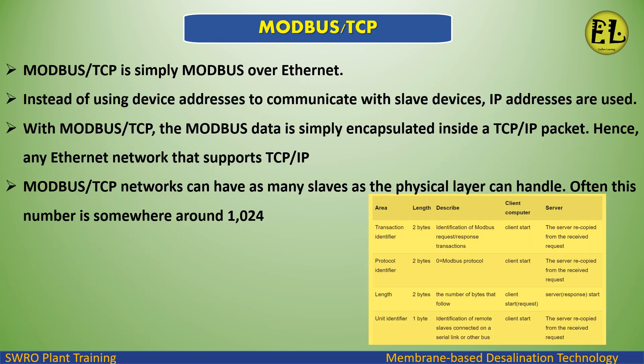Modbus/TCP is simply Modbus over Ethernet. Instead of using device addresses to communicate with slave devices, IP addresses are used. The Modbus data is encapsulated inside a TCP/IP packet. Any Ethernet network that supports TCP/IP can use Modbus/TCP, and these networks can have as many slaves as the physical layer can handle — often around 1,024.